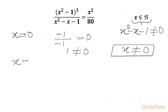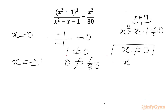Let's check x equal to plus or minus 1 also. This time the LHS will be 0, as x squared is 1 and 1 minus 1 is 0, which cannot equal 1 over 8. So x cannot be plus or minus 1 either.